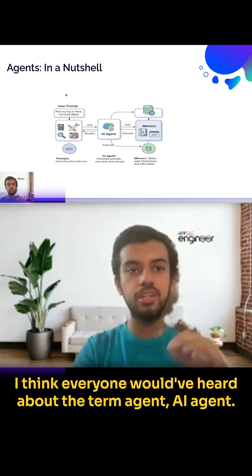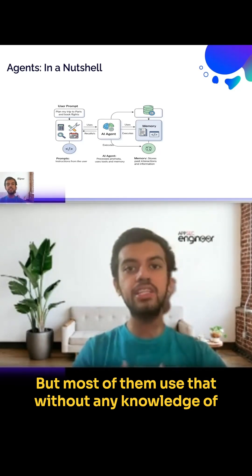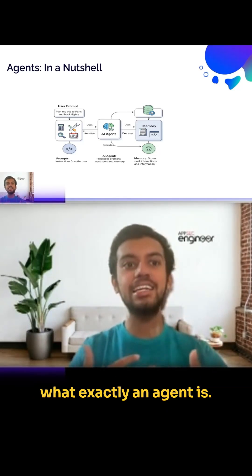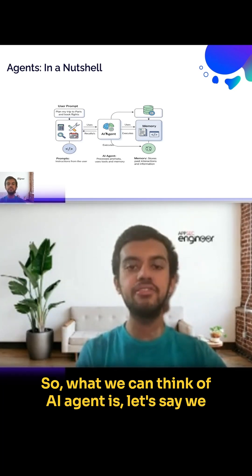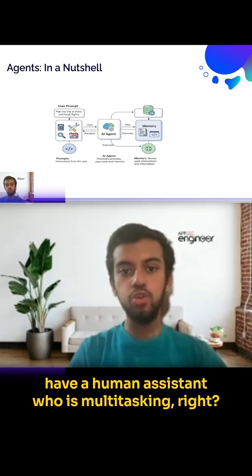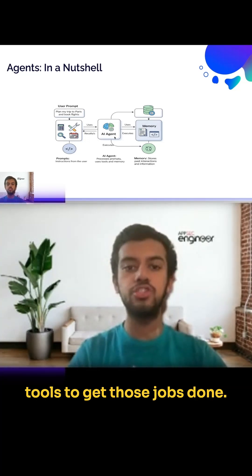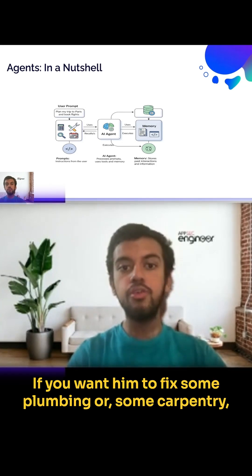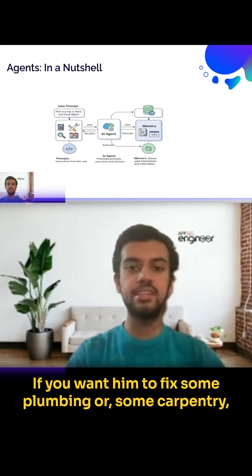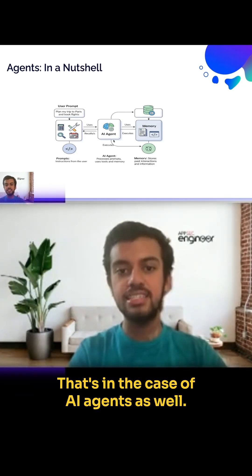Everyone has heard the term 'AI agent,' but most use it without knowing what it actually is. We can think of an AI agent like a human assistant who multitasks — he knows a lot of tasks, but he requires tools to get those jobs done. If you want him to drive you to a hospital, you need to give him a car. If you want him to fix plumbing, you need to give him a hammer. It's the same with AI agents.